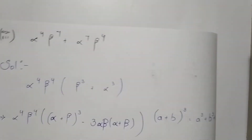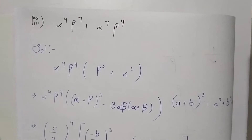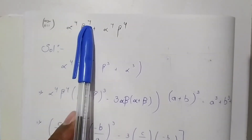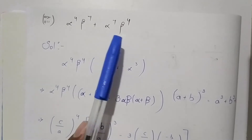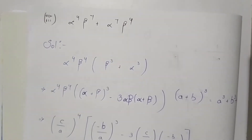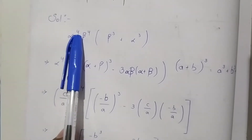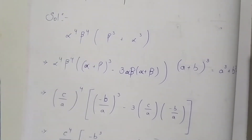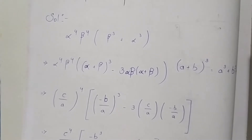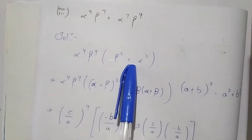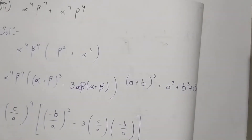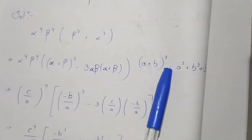Now coming to the third expression: alpha to the power 4 times beta to the power 7 plus alpha to the power 7 times beta to the power 4. We take alpha to the power 4 and beta to the power 4 as common, and we get the remaining factor as beta cubed plus alpha cubed. We use the identity that a cubed plus b cubed equals (a plus b) whole cubed minus 3ab(a plus b).